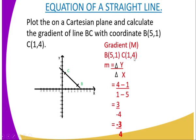So y2 is 4 (from coordinate C) and y1 is 1 (from coordinate B). Change in y becomes 4 minus 1. For change in x: x2 is 1 (from C) and x1 is 5 (from B), so change in x is 1 minus 5. The numerator is 3 (since 4 minus 1 = 3) and the denominator is negative 4 (since 1 minus 5 = -4). Therefore the gradient is negative three-quarters.